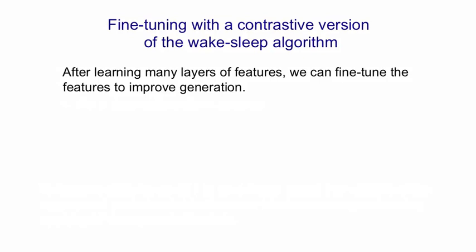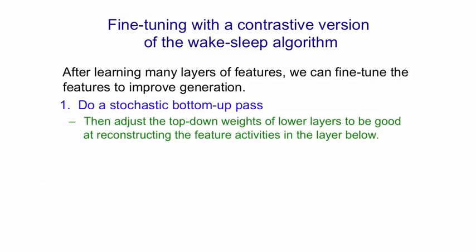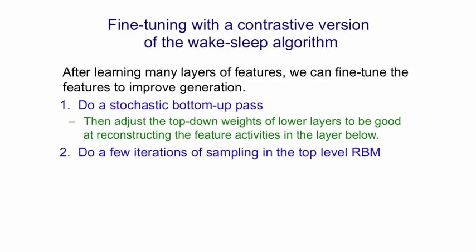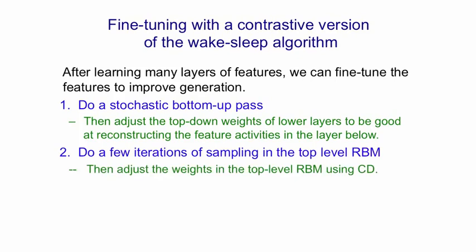We can do this using three different learning rules. First, we do a stochastic bottom-up pass and adjust the top-down generative weights of the lower layers to be good at reconstructing the feature activities in the layer below — that's just as in the standard wake-sleep algorithm. Then, in the top-level RBM, we go backwards and forwards a few times, sampling the hiddens and visibles of that RBM. That's just like the learning algorithm for RBMs. Having done a few iterations, we do contrastive divergence learning: we update the weights of the RBM using the difference between the correlations when activity first arrived at that RBM and the correlations after a few iterations in that RBM.